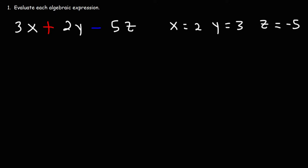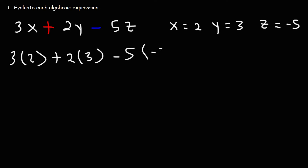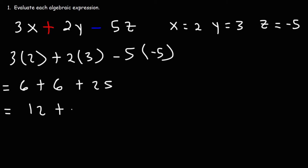Go ahead and evaluate this algebraic expression. What you need to do is substitute the values: replace x with 2, y with 3, and z with negative 5. Then do the math: 3 times 2 is 6, 2 times 3 is 6, and negative 5 times negative 5 is positive 25. 6 plus 6 is 12, and 12 plus 25 is 37. That's the answer for this first example.